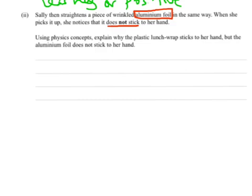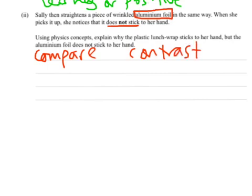Using physics concepts, explain why the plastic lunch wrap sticks, but the aluminium foil does not stick. So this is a very good question, and it follows a process of comparing and contrast. Okay, so we should do this.